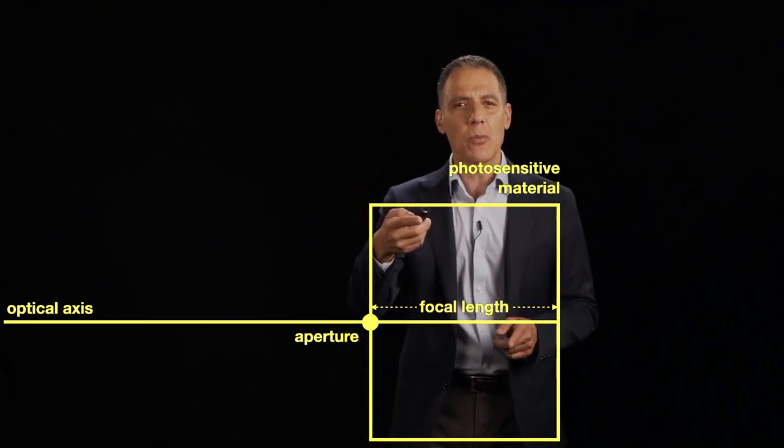So: optical axis, focal length, aperture, and the photosensitive material — these are the building blocks for a modern camera. The first part of modeling a modern digital camera is starting with the camera obscura: a box with a hole in it, a photosensitive material in the back, and light that enters and forms an image on the back. From there, we're going to pick up the image formation process next.